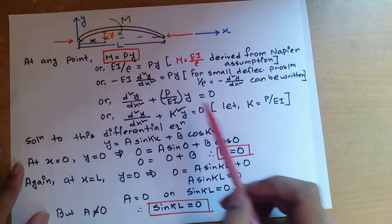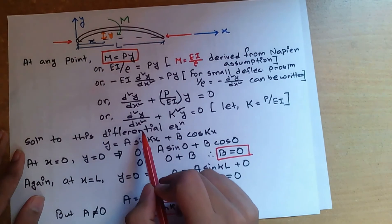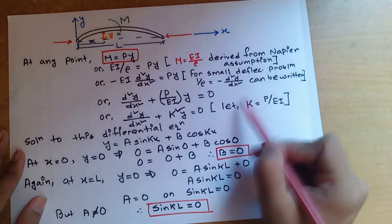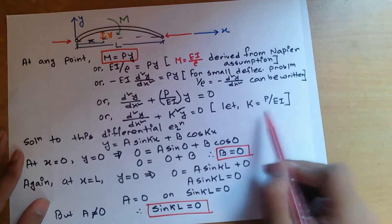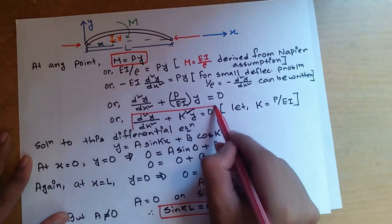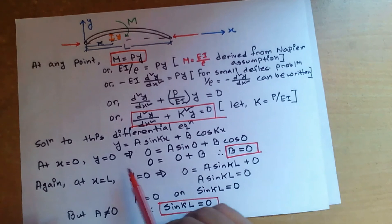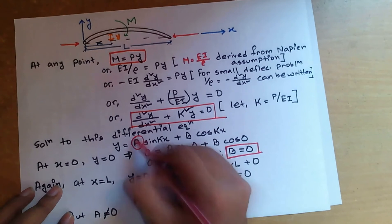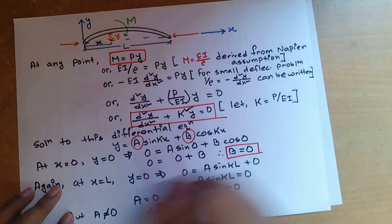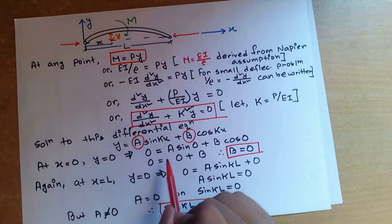Rearranging and interchanging left and right hand sides gives: d²y/dx² + (P/EI)·y = 0. Taking k² = P/EI, we can write: d²y/dx² + k²y = 0. We can take any variable, but here k is taken such that k² = P/EI. The solution of this differential equation is: y = A·sin(kx) + B·cos(kx). The values of A and B are found by applying boundary conditions.